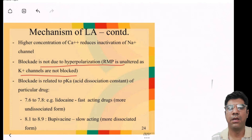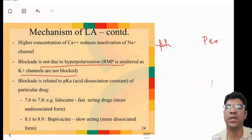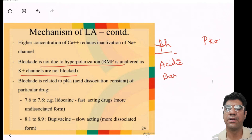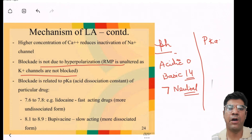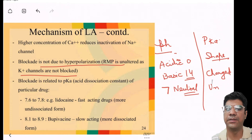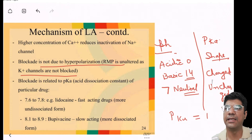Now let us discuss the role of pH and pKa. pH is a measure of how acidic or basic something is — a scale from 0 (very acidic) to 14 (very basic), where 7 is neutral. pKa is the number that tells us how a molecule can change its shape and become charged or uncharged. If pKa is very close to the pH of its environment, the molecule is more likely to change its shape.